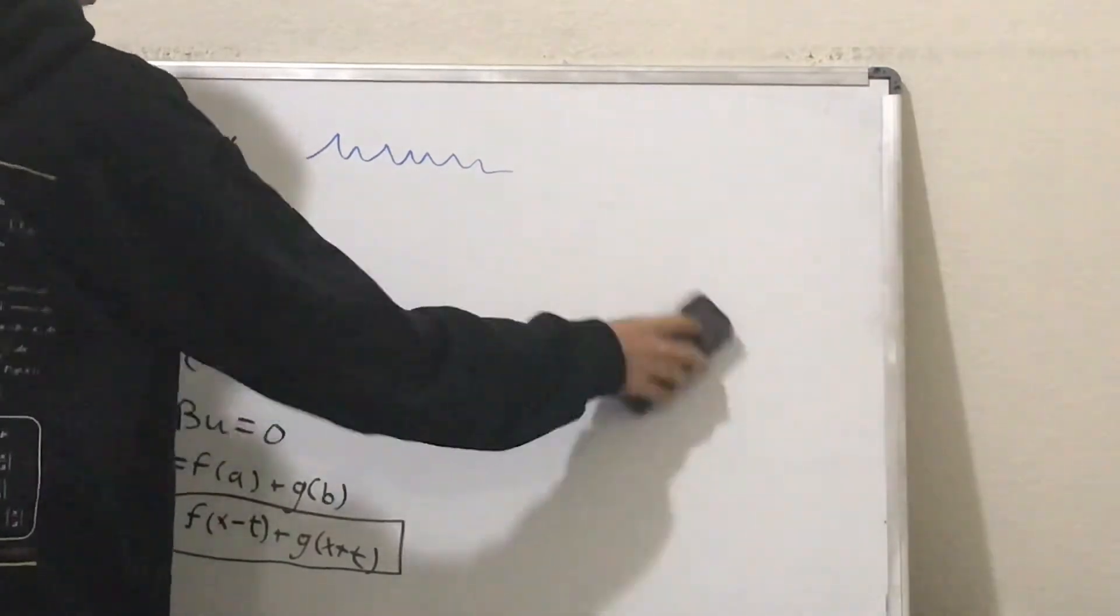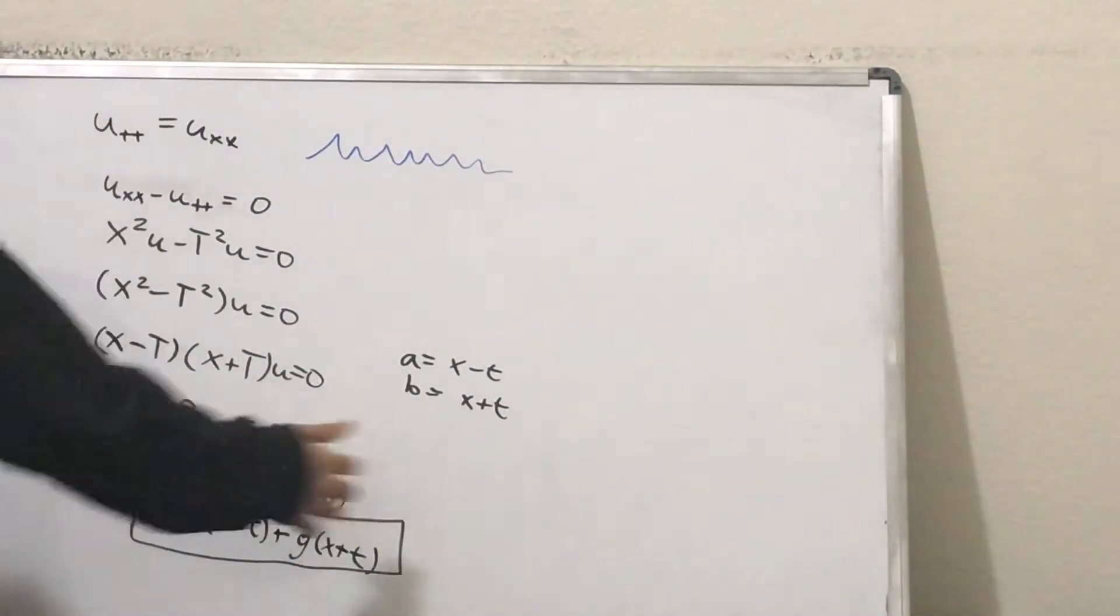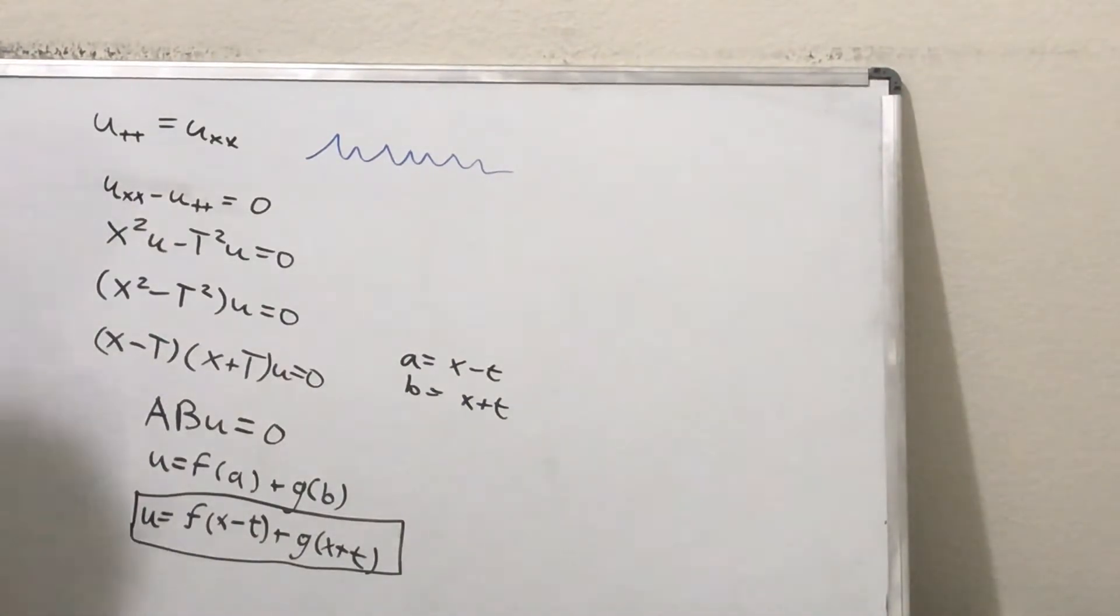Okay. That's pretty great. So, now we just substitute back in our x and t and we get a solution. So, this is a general solution for this PDE right here.